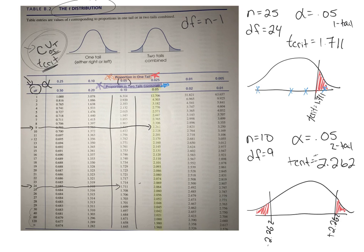So again, if my t obtained falls somewhere in this region, right, I fail to reject the null, but if my t obtained falls either greater than 2.262 or less than negative 2.262, that can then reject the null. Okay?